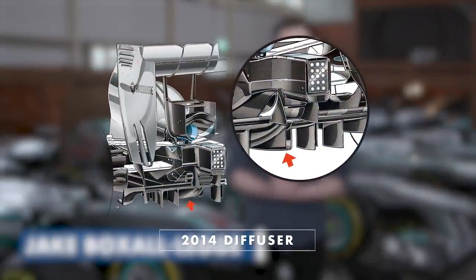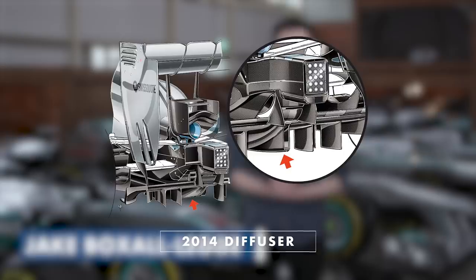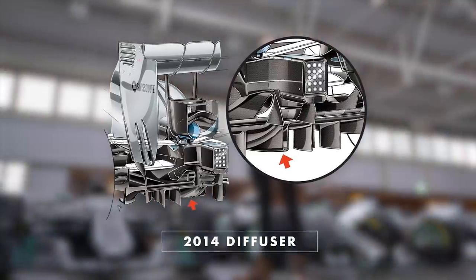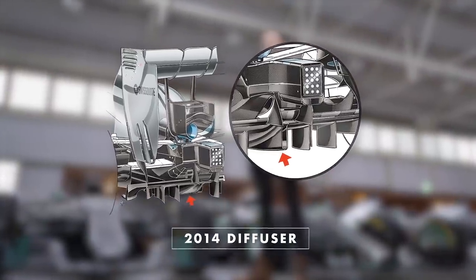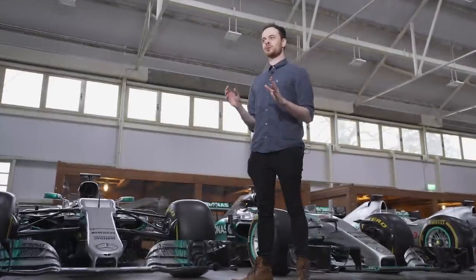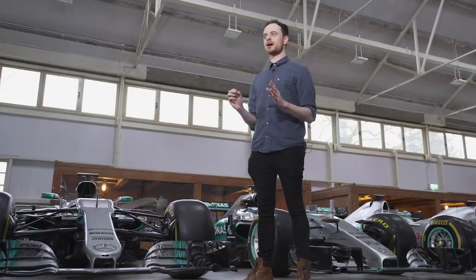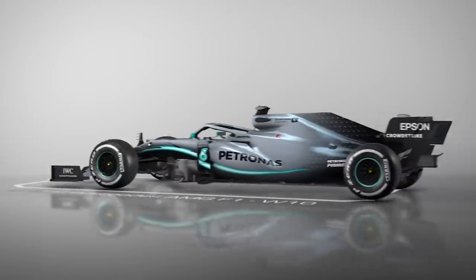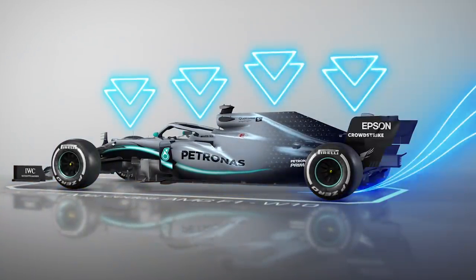The diffuser is the opening at the rear of the floor and is the part of the car responsible for generating the most downforce from the underside. Airflow is accelerated under the floor and with faster moving airflow comes a lower pressure area underneath. This generates downforce as the higher pressure air on top of the car pushes it downwards.